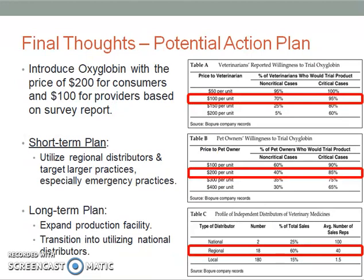Since it is more beneficial to immediately launch Oxyglobin, BioPure should introduce Oxyglobin at a price of $200 for consumers and $100 for providers, based on veterinarian and pet owner surveys on willingness to trial Oxyglobin as indicated in the tables on the slide. For short-term planning, BioPure should utilize regional distributors and target larger practices to generate the highest sales and accessibility with the current production capacity while decreasing distribution costs. They should especially target emergency practices, since 75% of primary care practices transfer their major surgery and severe trauma cases to emergency care facilities.